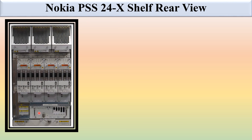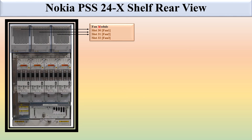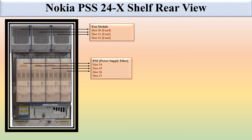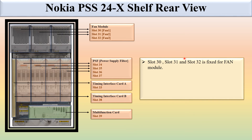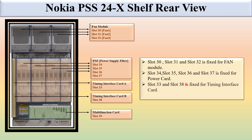This is the Nokia PSH 24-X shelf rear view. Slots 30, 31, and 32 are fixed for the fan modules — fan 1, 2, and 3. Slots 34, 35, 36, and 37 are fixed for the power supply. Slots 33 and 38 are fixed for the timing interface card. Slot 39 is fixed for the multi-function card. That is all about the slots and the Nokia PSH 24-X shelf view. Thank you.